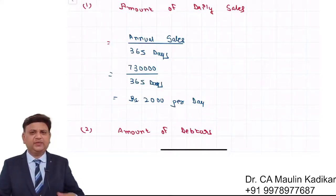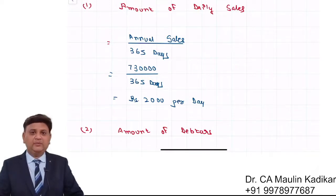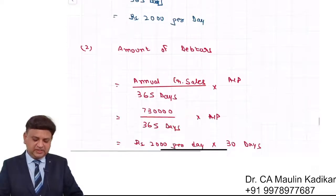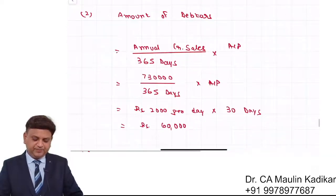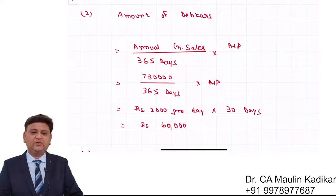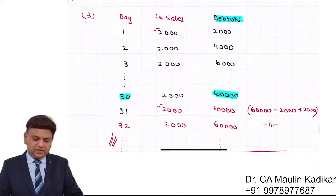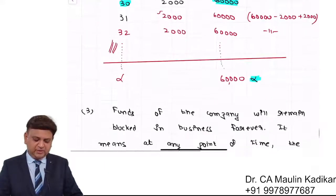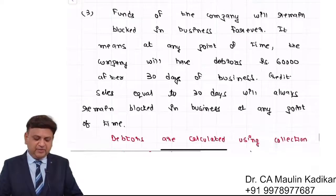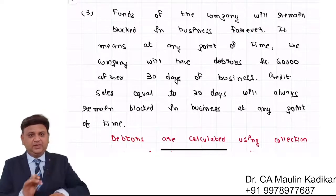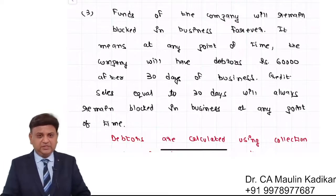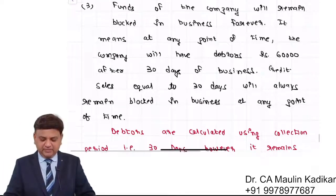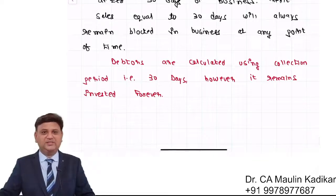So, to summarize: in the first part of the question we computed the amount of daily sales; in the second part we computed the debtors; and in the third part we answered that the funds of the company will remain blocked in debtors forever — for the entire duration the company continues to do business.